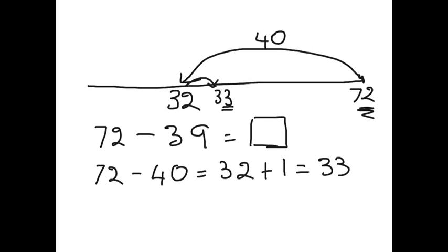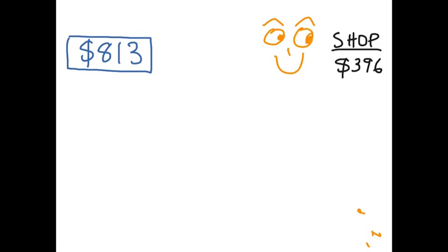This time I'm out shopping and I have a lot more money in my purse. I've got $813 in my purse and I go into a shop and I see something that's $396 and I decide to buy it. So here we are with my number line.